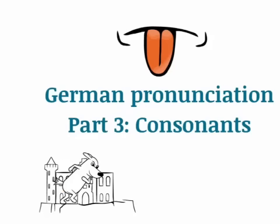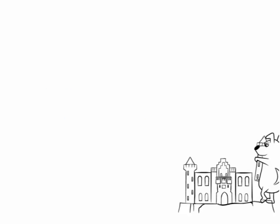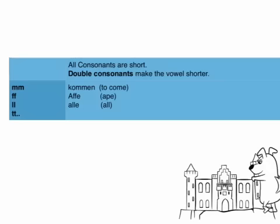Here you see the castle — it's not yet done, there is still a way to go. The first topic is double consonants. There are a lot of double consonants in German words.